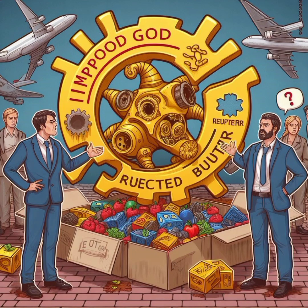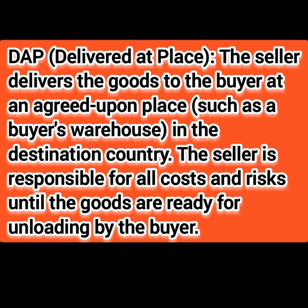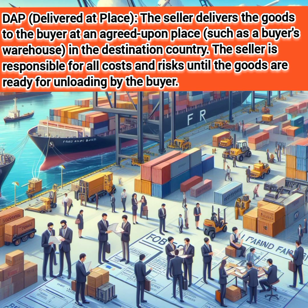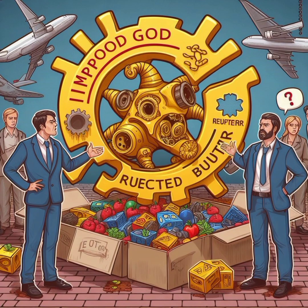If the buyer still says it's not acceptable and wants a better term, you may offer DAP, which stands for Delivered at Place. In this, you as the seller deliver the goods to the buyer at an agreed-upon place in the destination country. The seller is responsible for all costs and risks until the goods are ready for unloading by the buyer. Once the goods reach the destination country, the buyer takes care of unloading, customs clearance, and any local delivery.